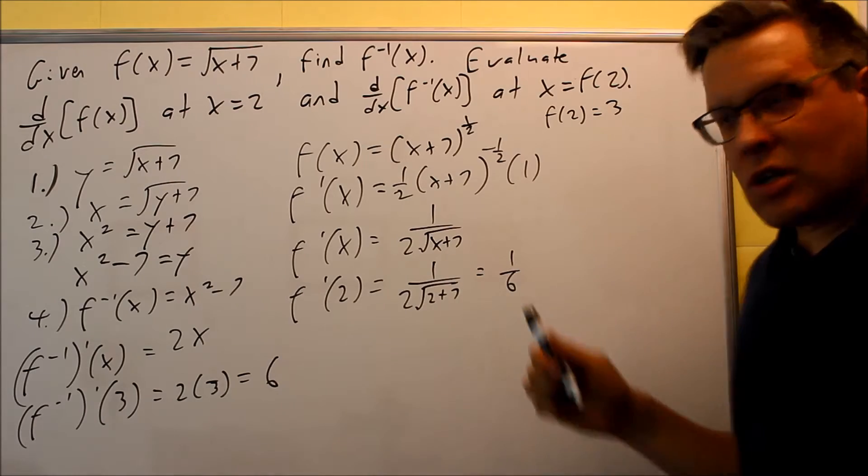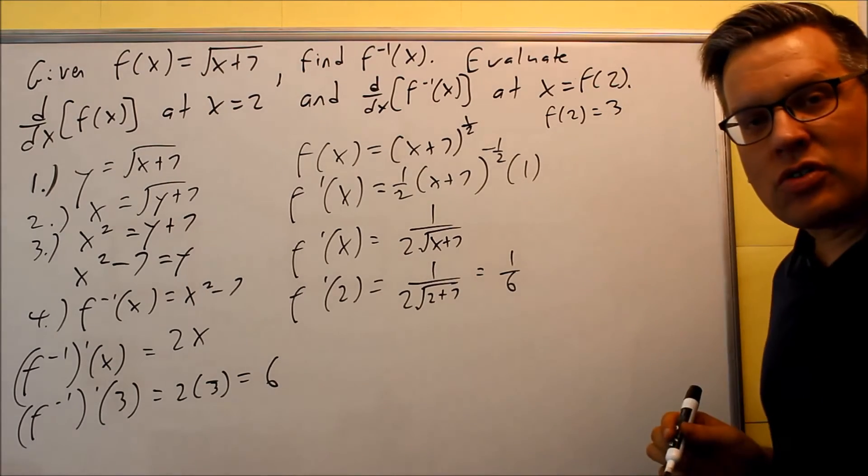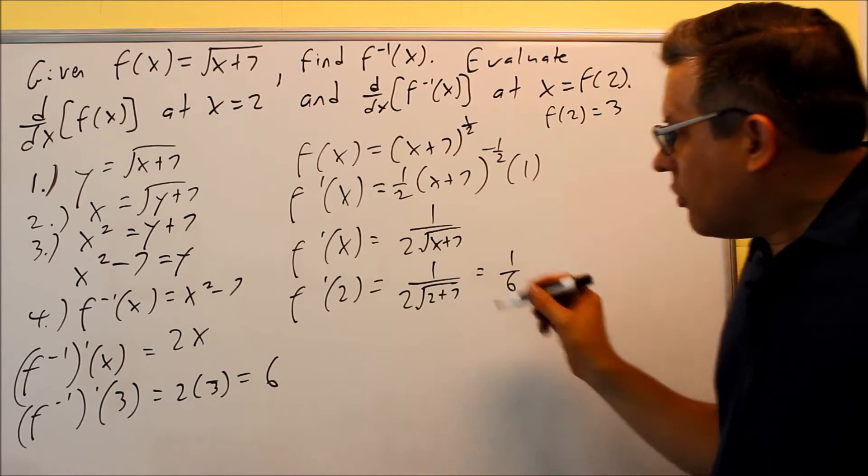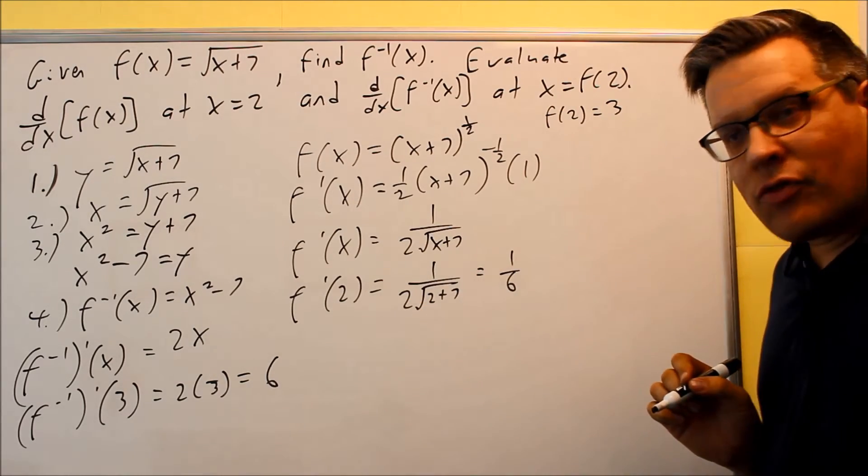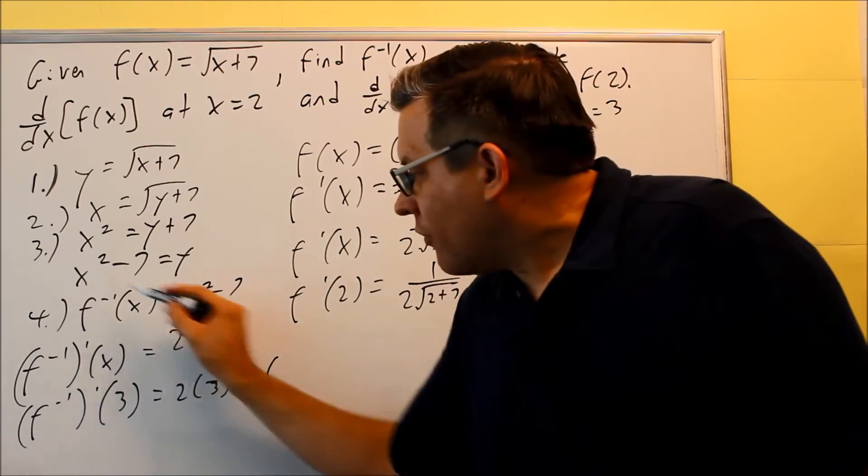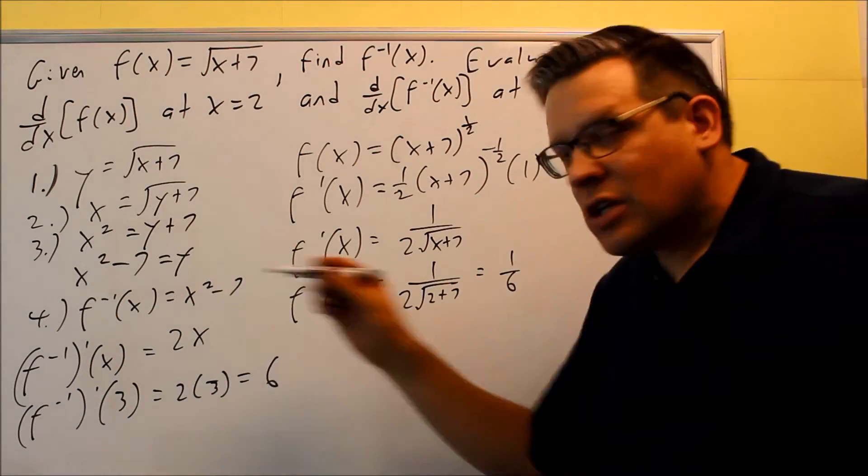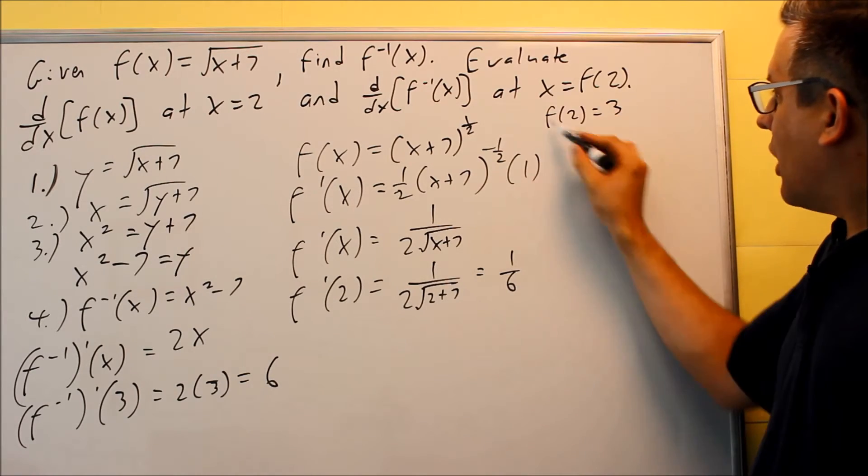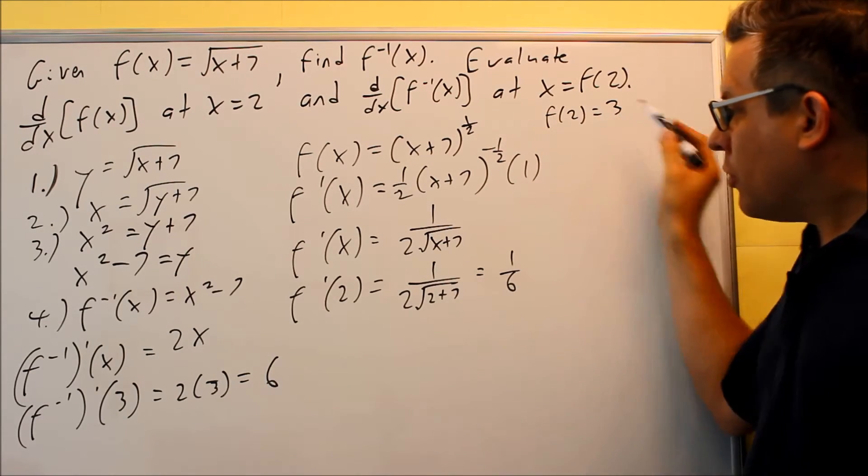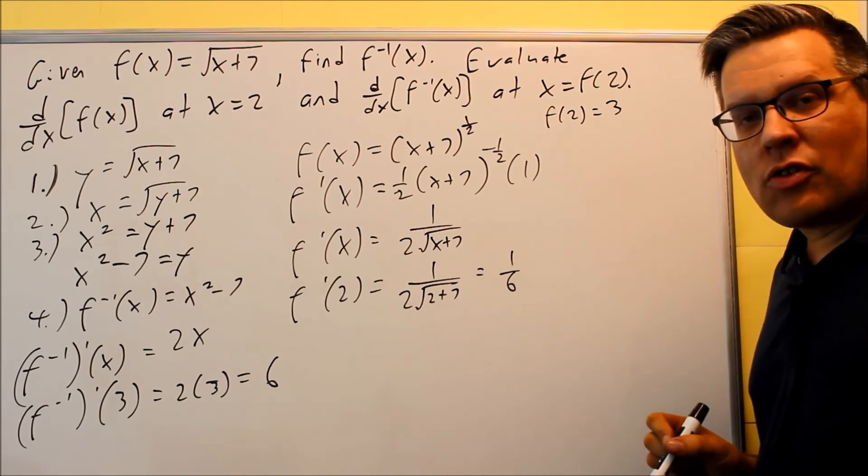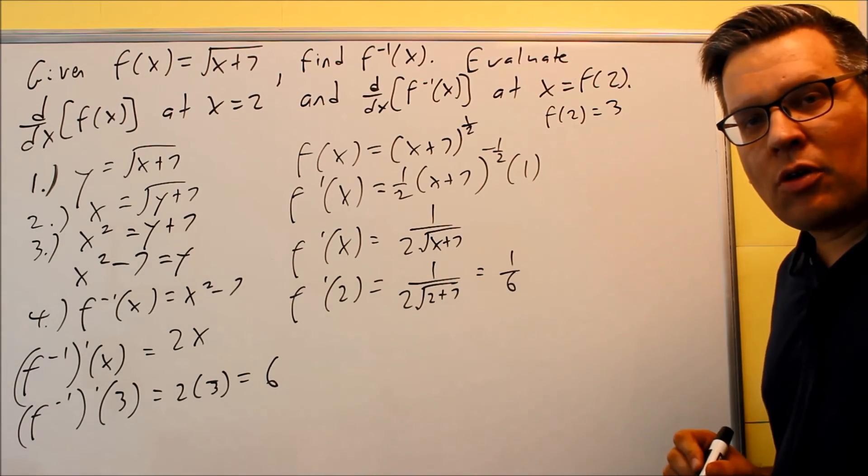What do we notice about these answers? They're inverses. The video we talked about before mentioned that these are inverses of each other. The derivative of the inverse equals 1 over the derivative. We found f(2) is 3, put that into the derivative and got 6. These are inverses, which makes sense based on what we talked about earlier.